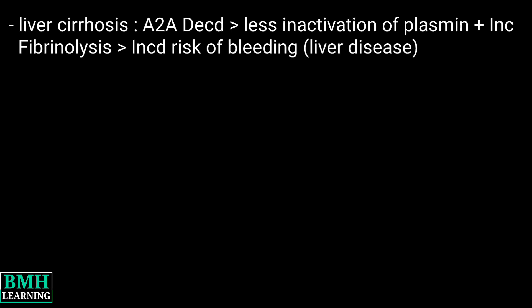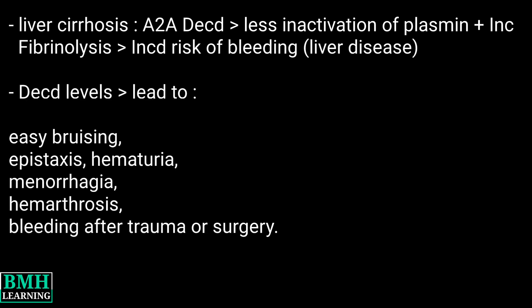Interpretation: In liver cirrhosis, there is decreased production of A2A, leading to decreased inactivation of plasmin and an increase in fibrinolysis, which is associated with an increased risk of bleeding in liver disease. Decreased levels may also lead to the following.